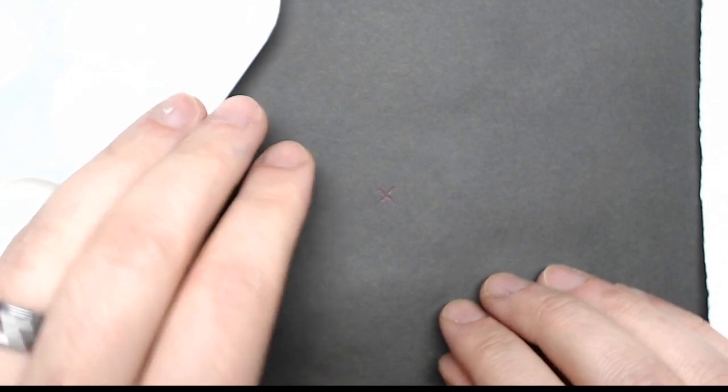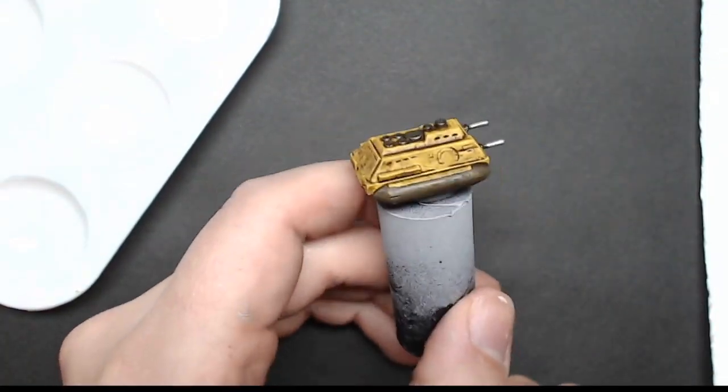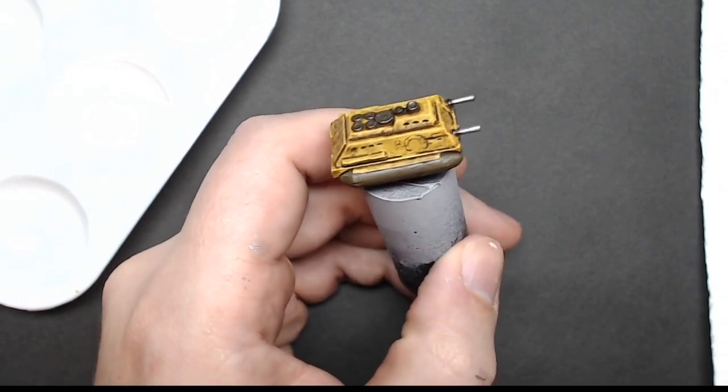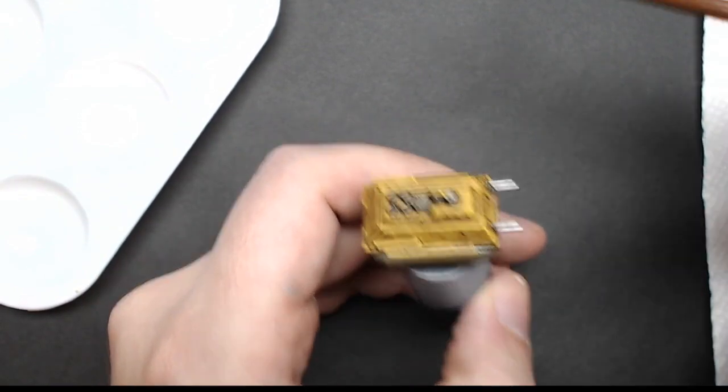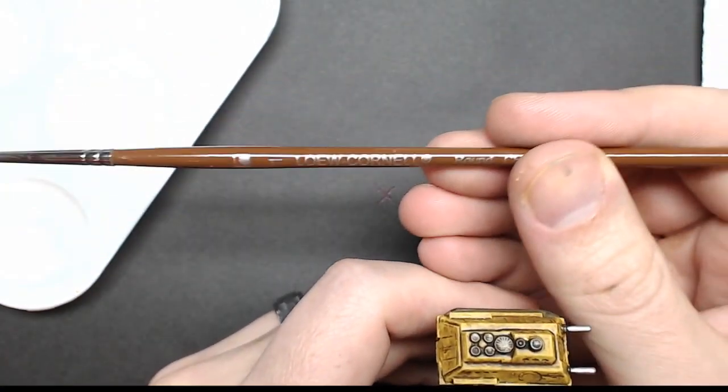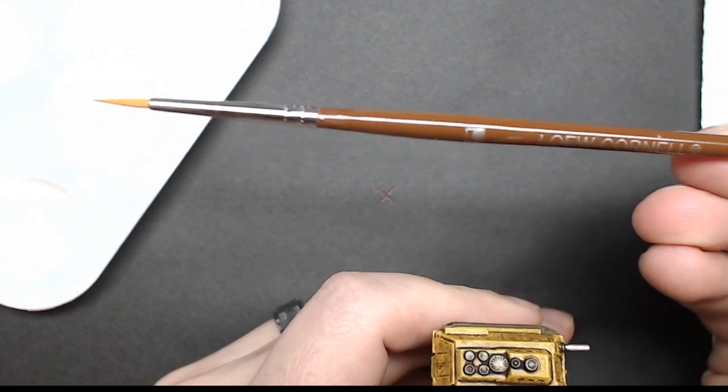I've also got my palette, some distilled water, brush soap, and paper towels to keep my brush free of contaminants as I work. Here's the model, we'll be using this hover tank. I've also got a number one Loew-Cornell round brush, it's basically a dollar or two dollar brush at Hobby Lobby.